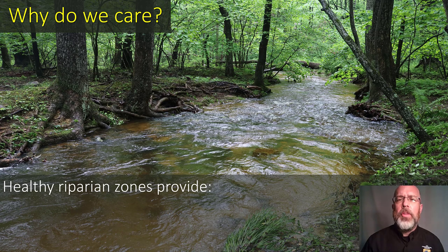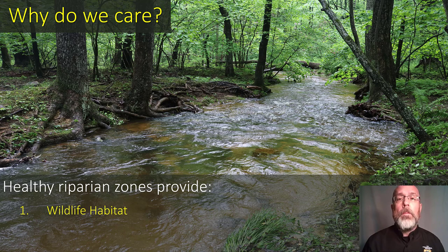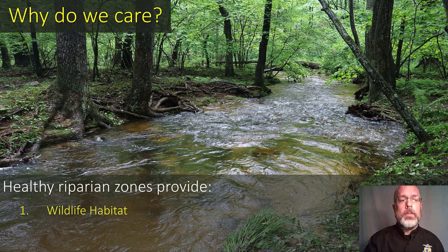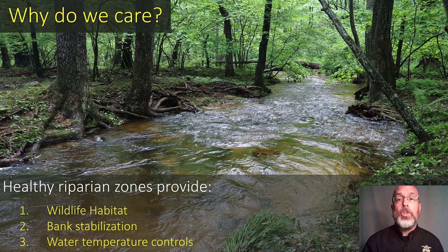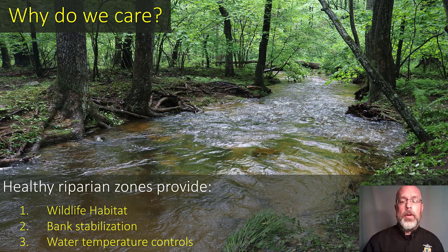Why do we care about healthy riparian zones from a stream restoration perspective? First, riparian zones provide wildlife habitat — not just terrestrial habitat, but also aquatic habitats. They provide bank stabilization to the stream and prevent erosion. They also help control water temperature, keeping things cool. The cooler the water temperature, the more oxygen it can carry and the better it is for aquatic organisms that live there.